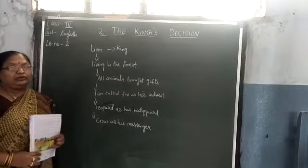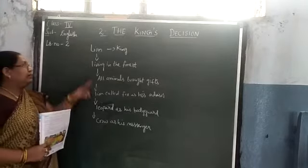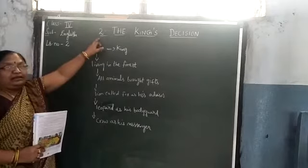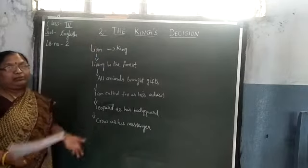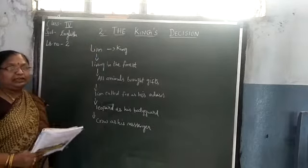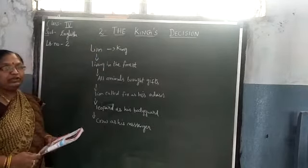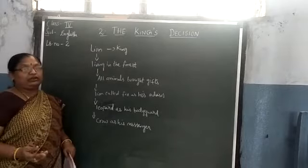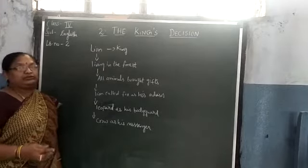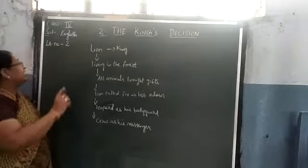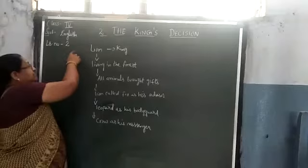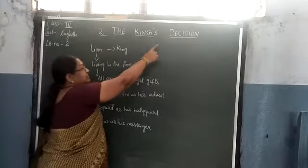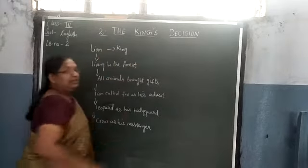We are going to start the second lesson. You have all completed the first lesson — the writing part, objectives, everything. So, we are going to start the second lesson. The second lesson is called 'The King's Decision.'